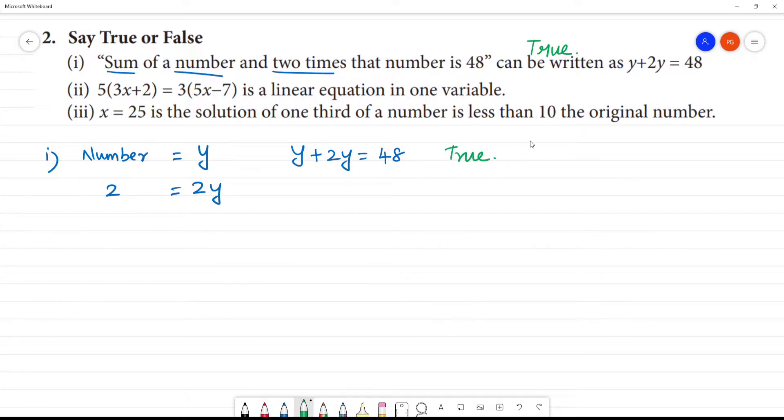Now the second one: this is a linear equation in one variable. For a linear equation in one variable, you should have only one variable. The variables are x, y, z. So that should be only one variable. We have x, so one variable is correct.